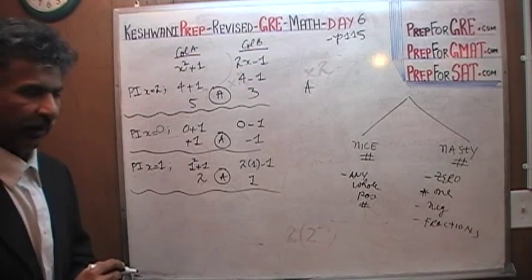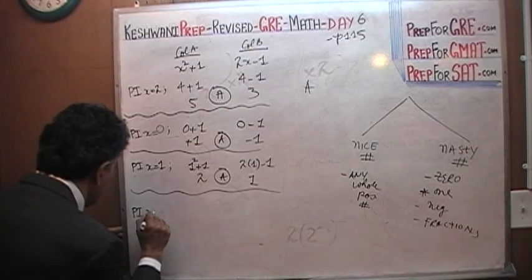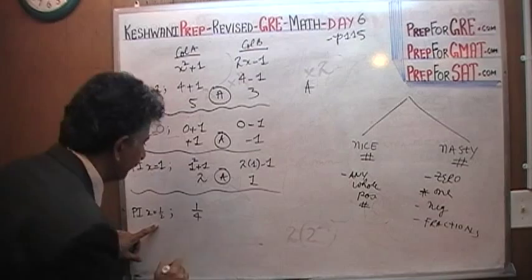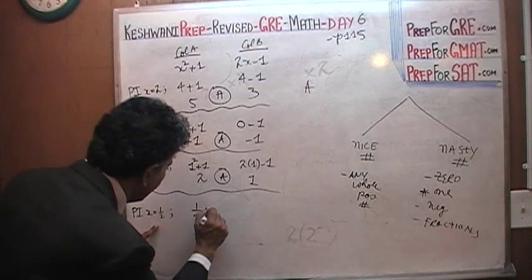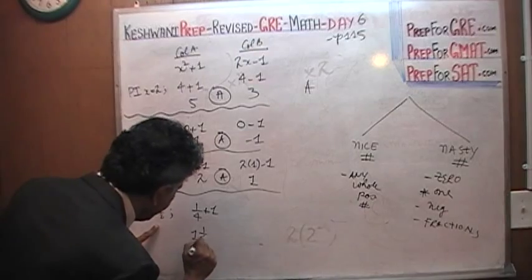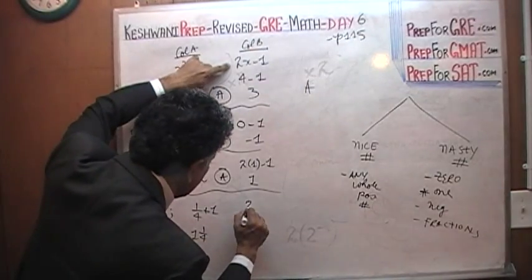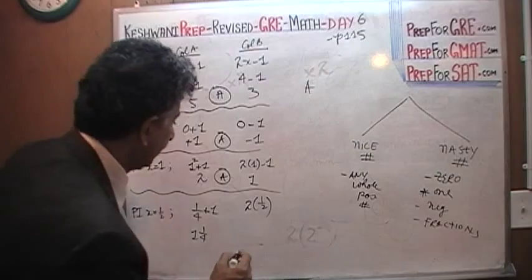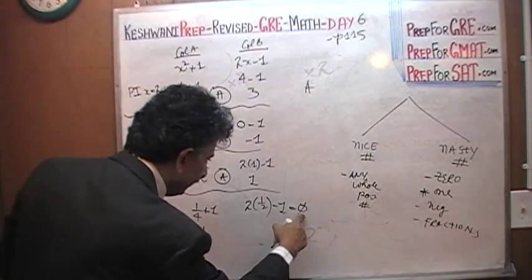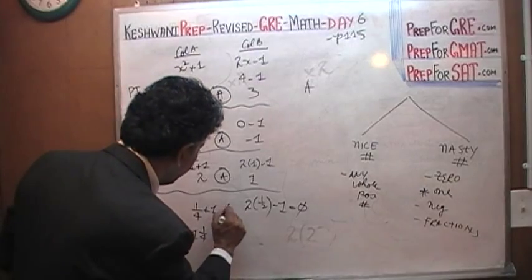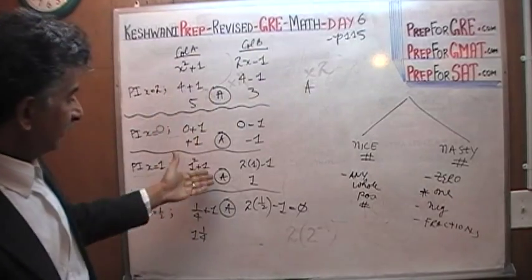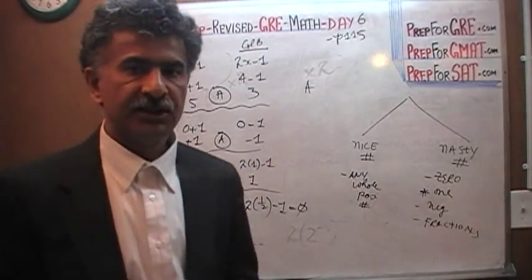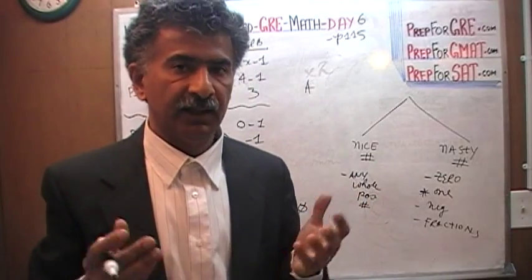Let's try fractions. Let's plug in x equal to one half. If x were one half, one half squared is one quarter. One quarter plus one is one and one quarter. In column B, two times one half is one; one minus one is zero. Zero is less than one and one quarter — the answer is A. Because the answer does not change across different scenarios — plugging in a nice number and nasty numbers — the answer does not change. Therefore it is highly likely that the answer is, in fact, A.